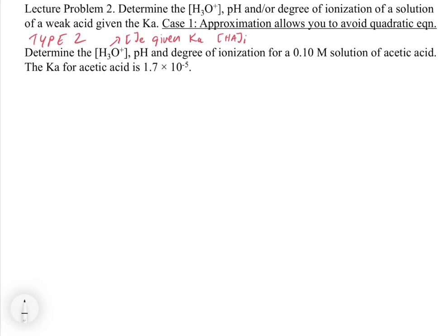We're determining an equilibrium concentration, and the pH and degree of ionization all come from the concentration of H3O+ and the concentration of A-, which we're going to calculate. What we get is a Ka and an initial concentration of the acid — a direct replication of a type 2 problem, getting an equilibrium concentration from an initial concentration and the Ka.